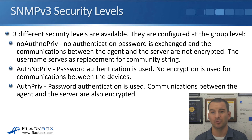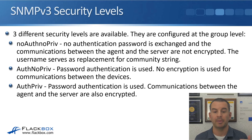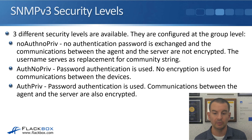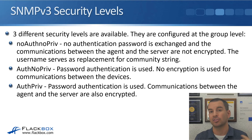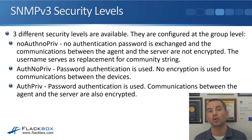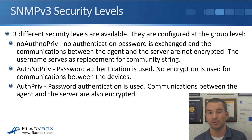The last level is the one we're most likely going to want to use: auth priv. With auth priv, password authentication is used, and communications between the agent and the server are also encrypted. The NMS server and the device securely authenticate each other, and whenever they're sharing information that is also encrypted. This is the most secure way of doing it, and if we're using SNMP version 3, most likely we'll be using auth priv.